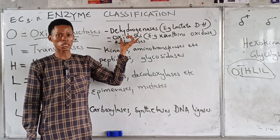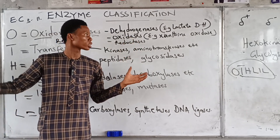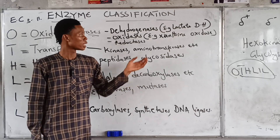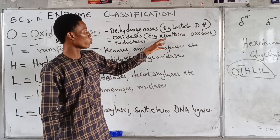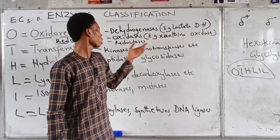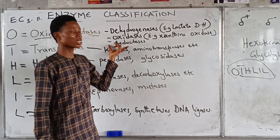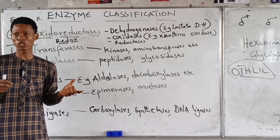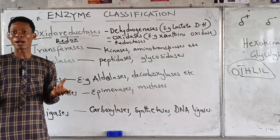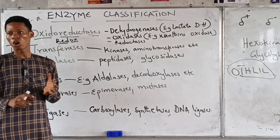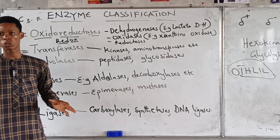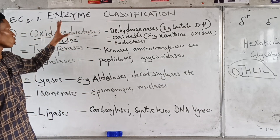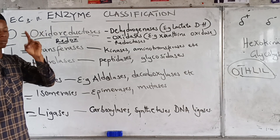Oxidases add oxygen — for example, xanthine oxidase. Reductases catalyze reduction reactions by adding hydrogen or removing oxygen. So these are the oxidoreductases, the first class of enzyme.